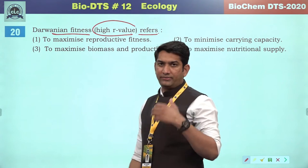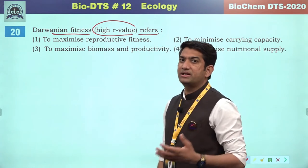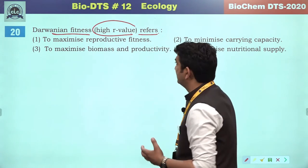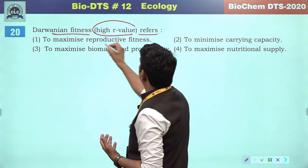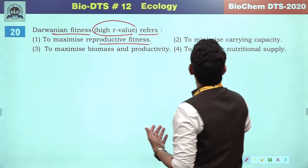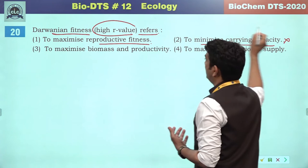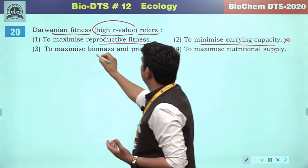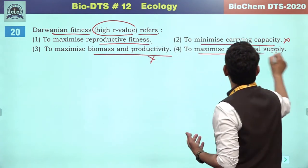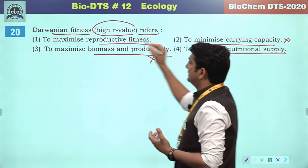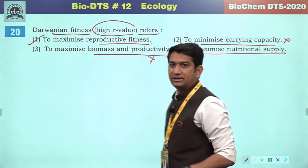Darwinian fitness — according to Darwin, living organisms optimize themselves to maximize their reproductive capability. To maximize reproductive fitness, minimize the carrying capacity, maximize biomass and productivity, or maximize nutritional supply — the first option will be the correct answer.